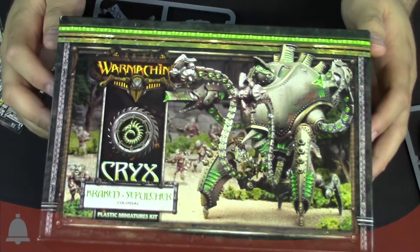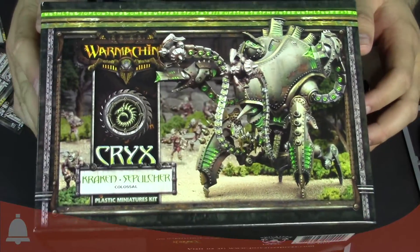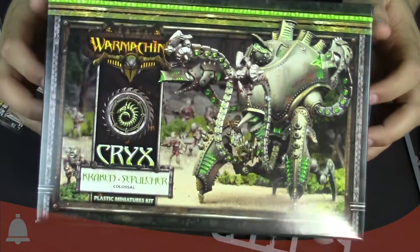Again, the Kraken, super awesome colossal for Cryx, and the Sepulcher. Also I don't know if I'm saying that right, but it sounds cool anyway. That's it for this unboxing. Hope you enjoyed it. I'm Adam here from Beasts of War, thanks for watching. Have a good one.